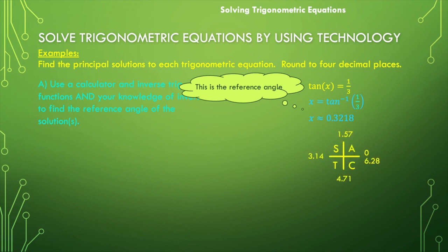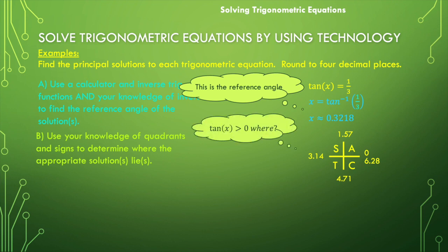And so now let's think about where are we focusing on. We know that tangent is positive where? That's the first quadrant and the third quadrant. So we need to find an angle in the first quadrant and the third quadrant. Half of our work is done because we have our first quadrant angle from our calculator. First quadrant angle is 0.3218.